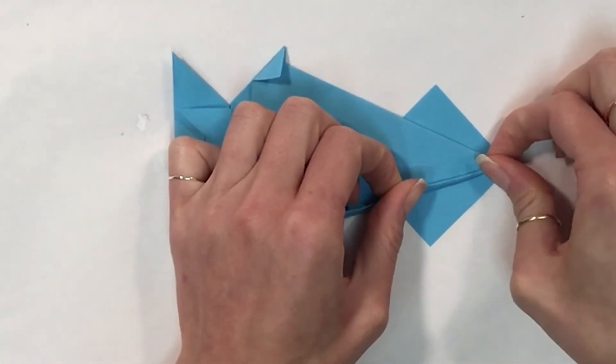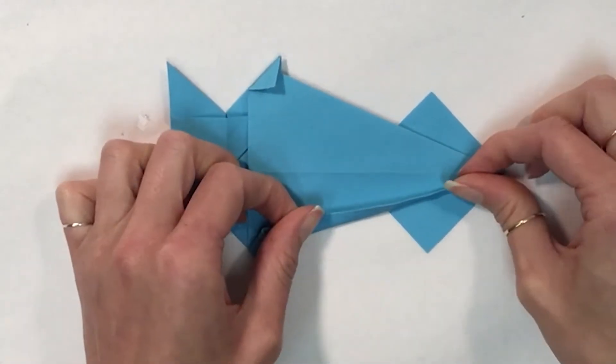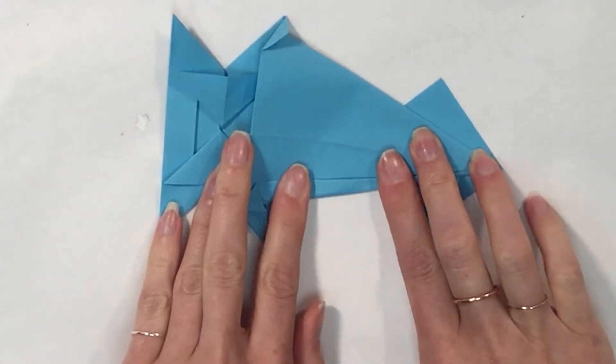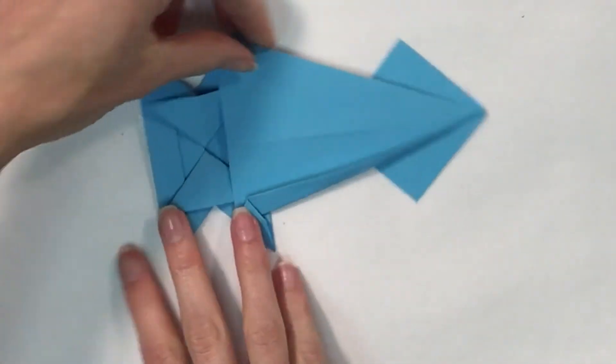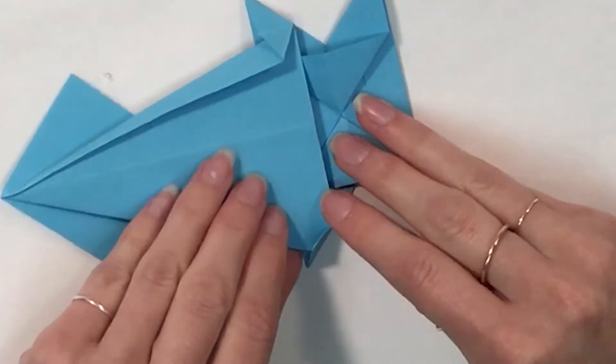Especially near this tip, very gently roll the paper to get a small fold line. Repeat for the other side.